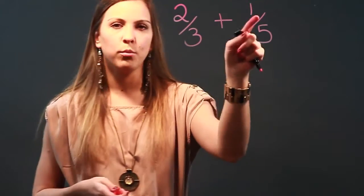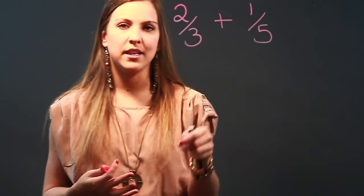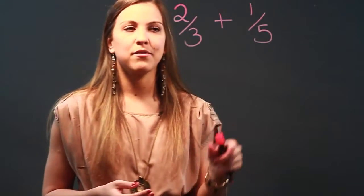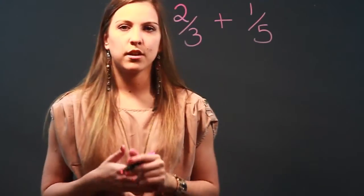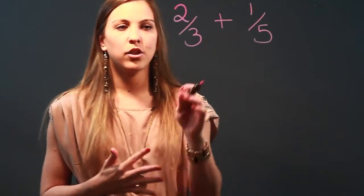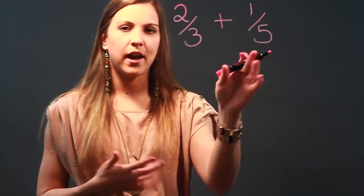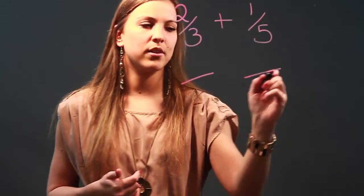That's what they're called. So the top is called the numerator and the bottom is called the denominator. You do have to have the same denominator before you can add these. So what we're going to do is look for the least common denominator, meaning the lowest number that both 3 and 5 can go into, and that number is 15.